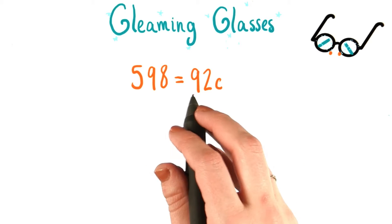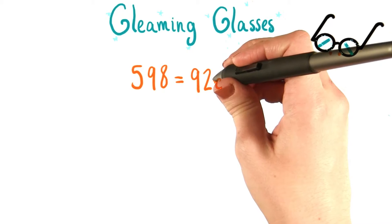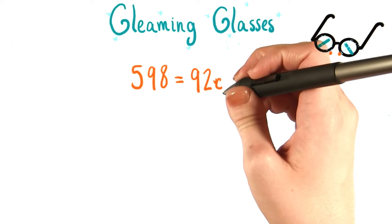Instead of having just c, though, we have 92 times c. Remember, there's an invisible multiplication sign right here between our coefficient and our variable.